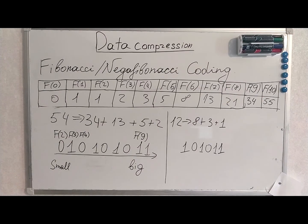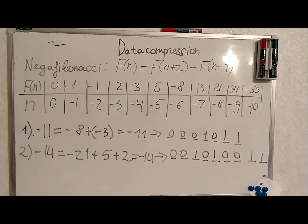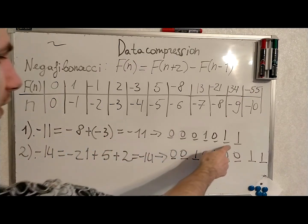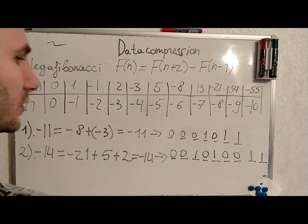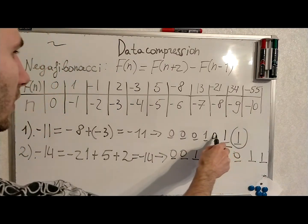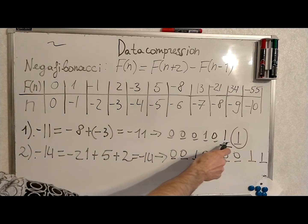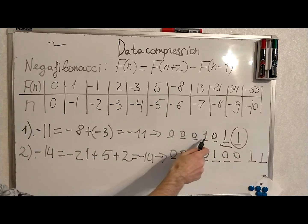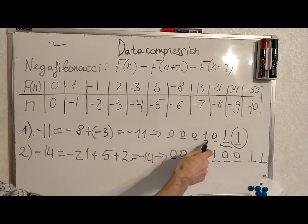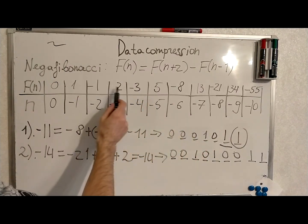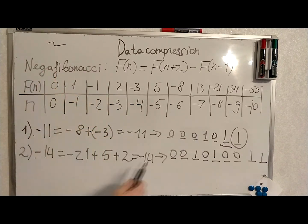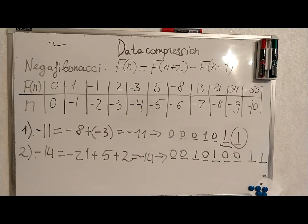We will now try some examples with Nega-Fibonacci coding. We produce our numbers in a similar fashion. For minus 11: minus 8 refers to the sixth position in the sequence — that is the ending one. We use minus 8. A 0 refers to position 5, which is not included. Minus 3 gets a 1 since it is included. Then 0, 0, 0 for positions not included. In this way we produce our number. Similarly for minus 14 and so on.